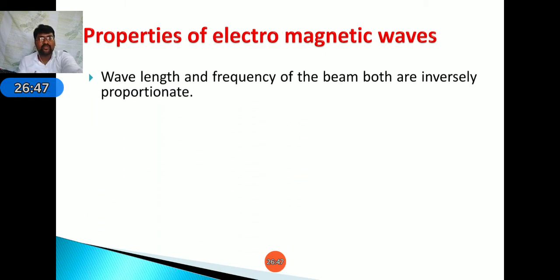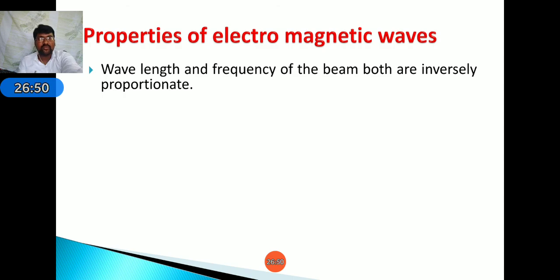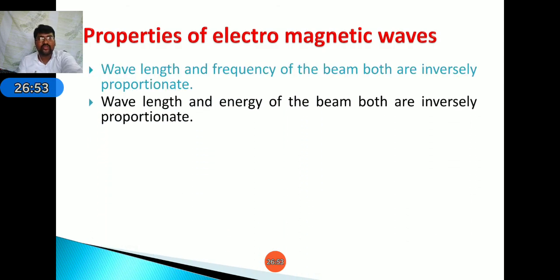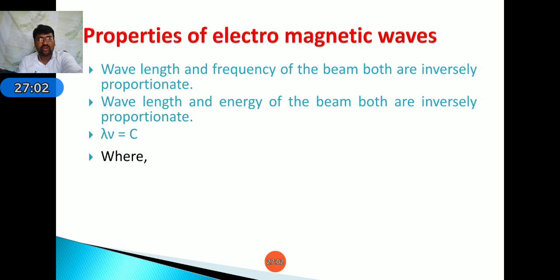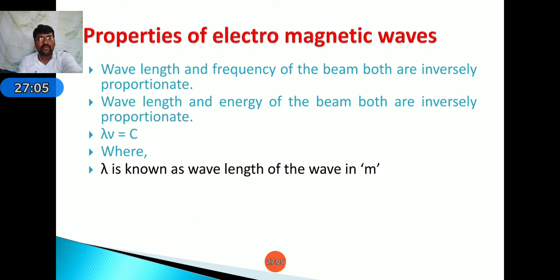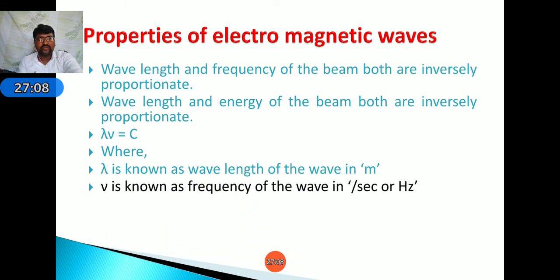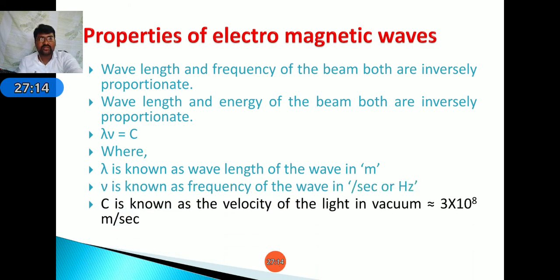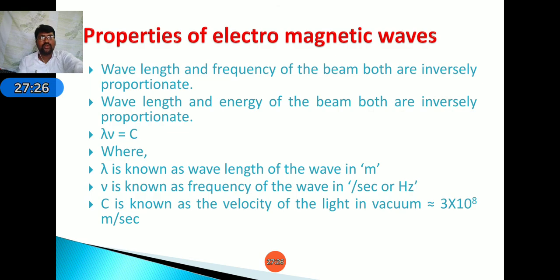Properties of electromagnetic waves: wavelength and frequency of the beam are inversely proportional, and wavelength and energy of the beam are also inversely proportional. The relation is λ × v = c, where λ is the wavelength in meters, v is the frequency in hertz (seconds⁻¹), and c is the speed of light in vacuum — 3 × 10⁸ meters per second. That concludes the topic of laser beam machining.